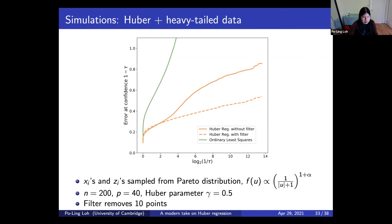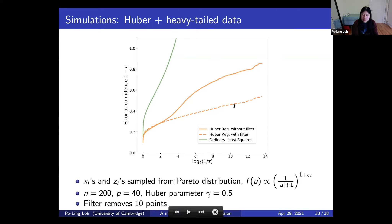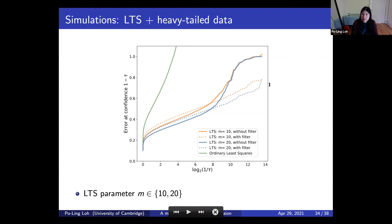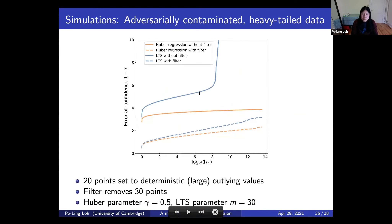Some simulations demonstrate that filtering is actually necessary. Even though Huber regression performs well for adversarially contaminated y's, when x's are also adversarially contaminated, filtering improves performance. Experiments with heavy-tailed x's and y's show the filtered algorithm outperforms the non-filtered one (gap between dotted and solid lines). This holds for filtered Huber, filtered least-trimmed squares on heavy-tailed data, and filtered Huber and least-trimmed squares on adversarially contaminated data (simulated by planting outliers with very large values).